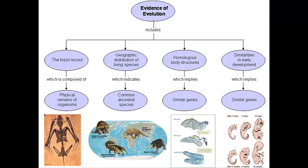Evolution is a process that has transformed life over billions of years on earth, and the evidence used to describe this process includes: one, the fossil record, which is composed of the physical remains of organisms; and two, geographic distribution of species, which indicates a common ancestry.